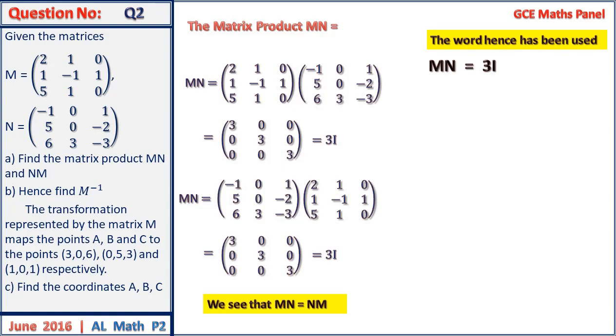And M times one over three N should be equal to I. From here, the product of two matrices giving us the identity matrix implies one of them is the inverse of the other. So M times one over three N giving me the identity matrix means the inverse of matrix M is one third of matrix N.